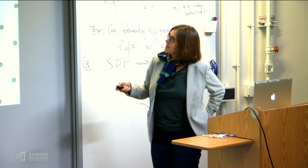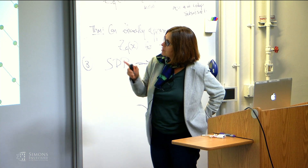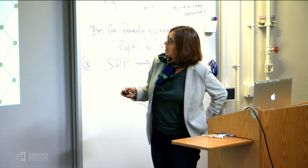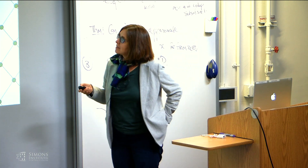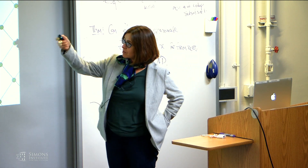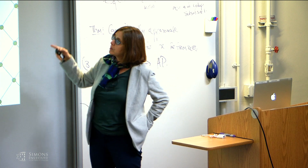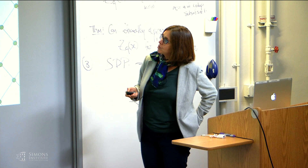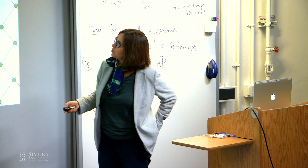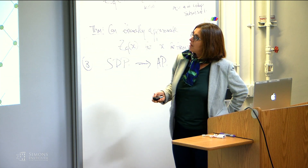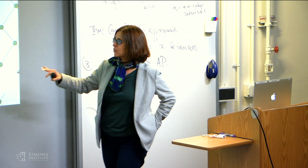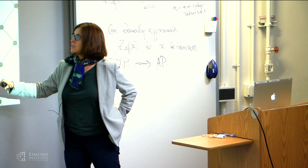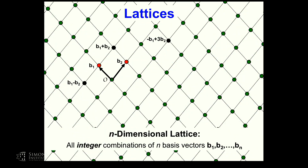So, lattices. This is a picture of a lattice — a bunch of points forming a grid. We define this lattice essentially according to a basis. So these are two basis vectors, and you can express all these main points as integer combinations of the basis vectors. For example, v1 plus v2 and v1 minus v2. Although this is two-dimensional, in general we're going to be interested in n-dimensional lattices, where it's all integer combinations of the n basis vectors.